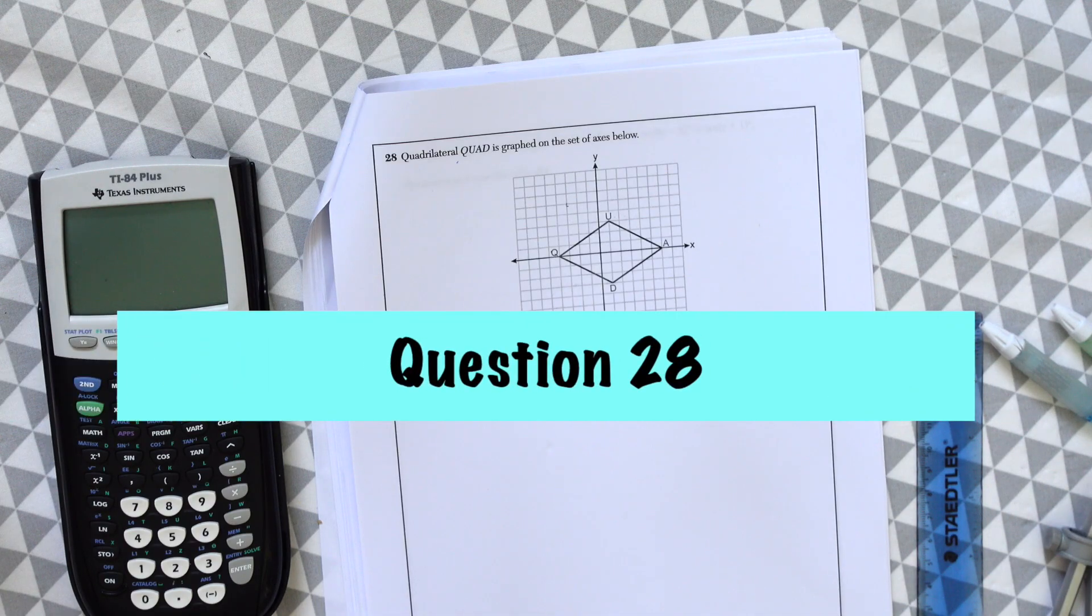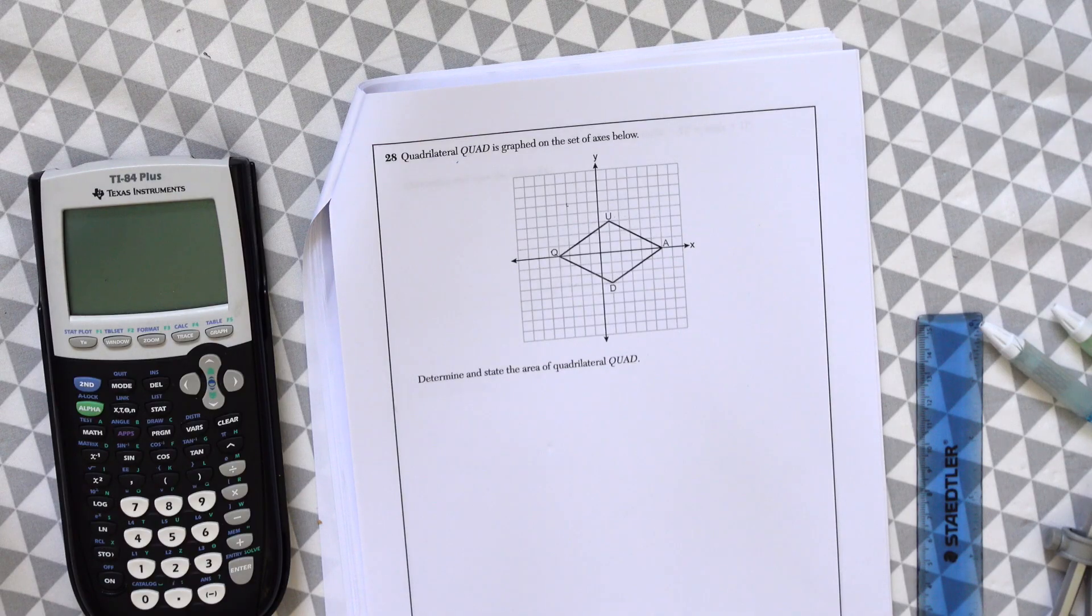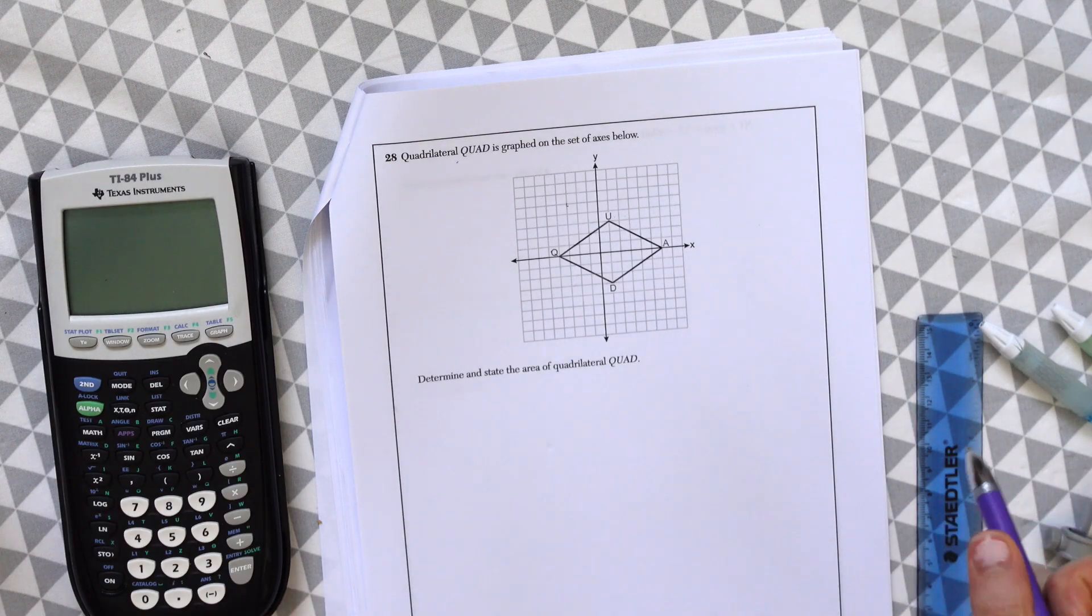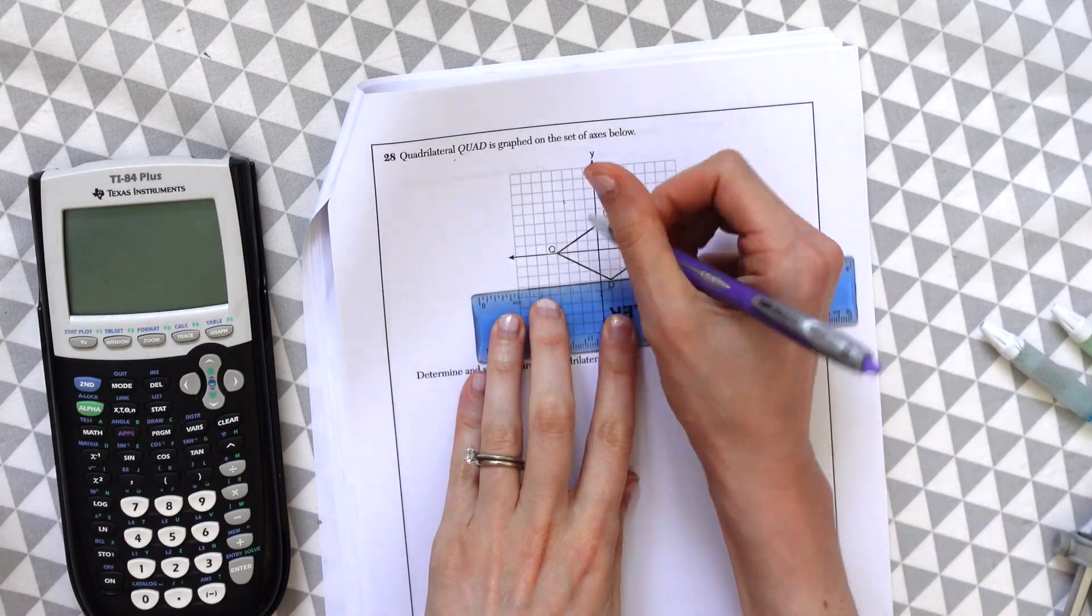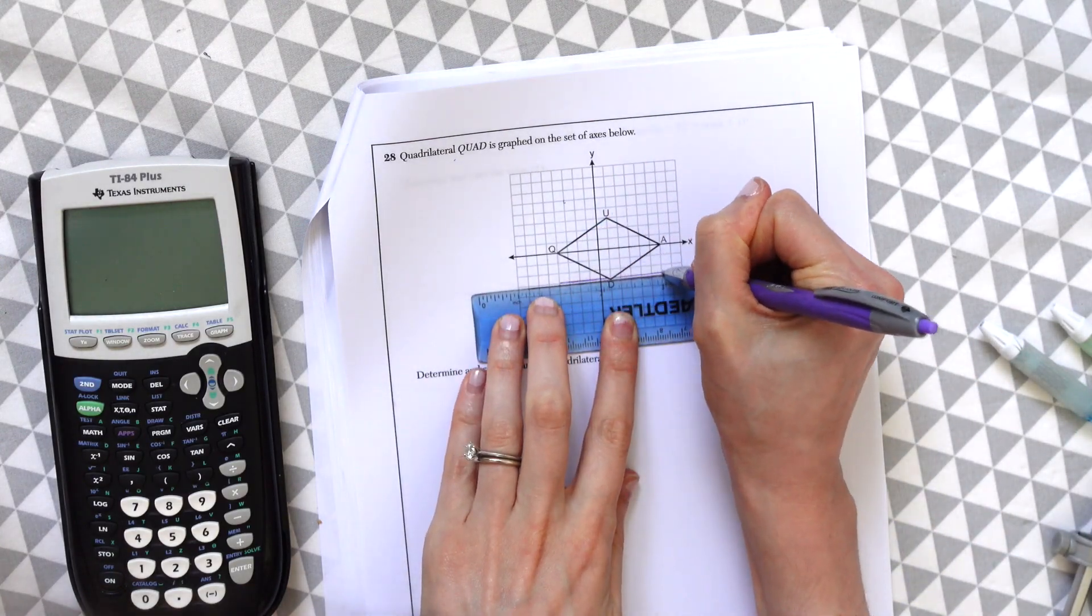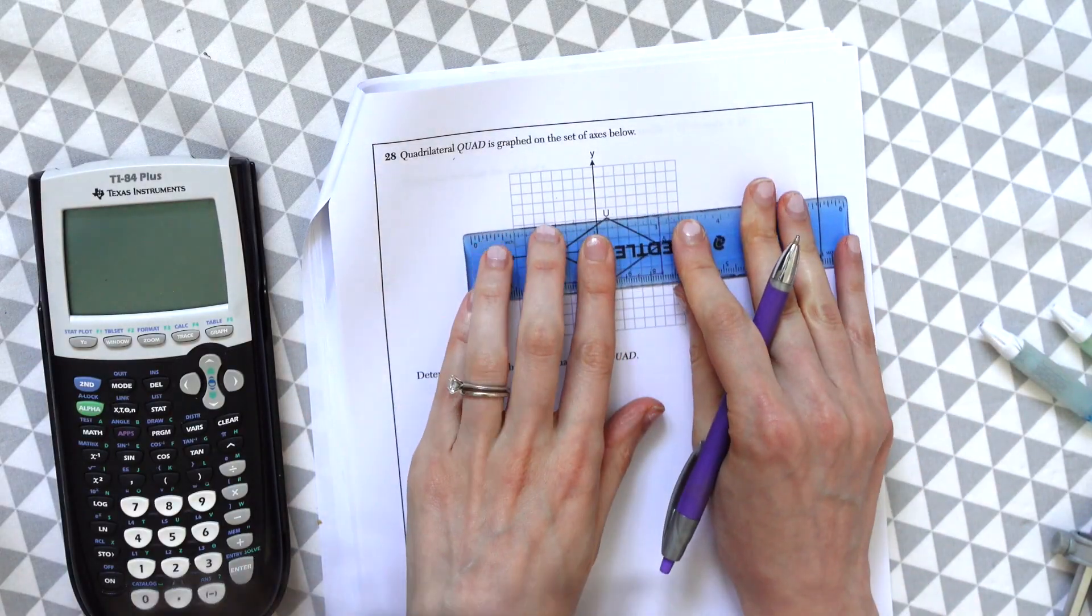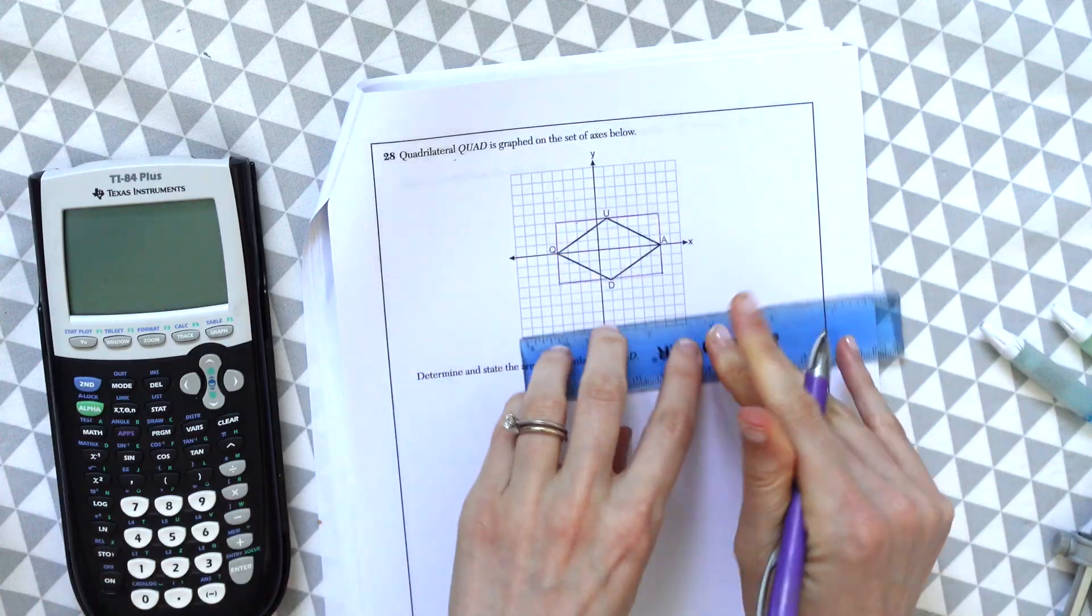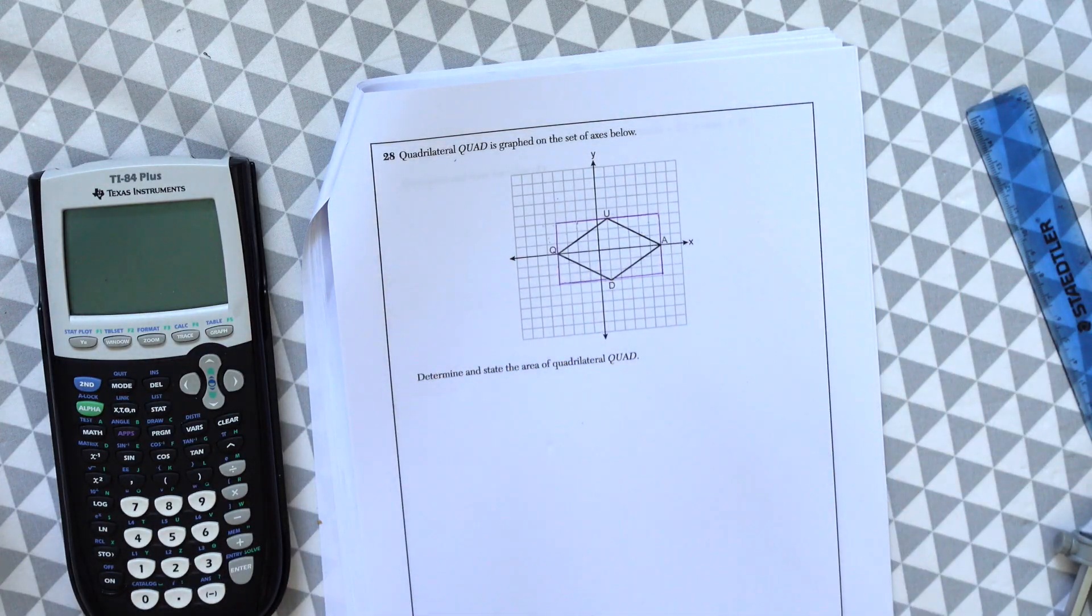Question 28. Quadrilateral QUAD is graphed on the set of axes below. Determine and state the area of quadrilateral QUAD. So for these kinds of questions, I'm going to start out by drawing a rectangle around our quadrilateral.